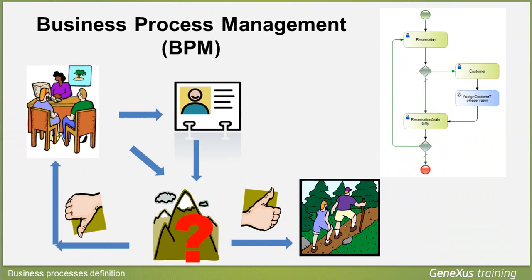In this way, we see that GeneXus allows us to model business processes in an intuitive way, automatically resolving which objects should be executed in each case in accordance with the definition we make through the diagram. To learn more about this topic, visit the site at the address shown on the display.